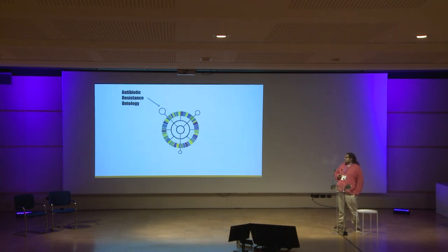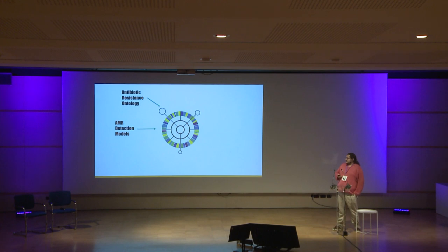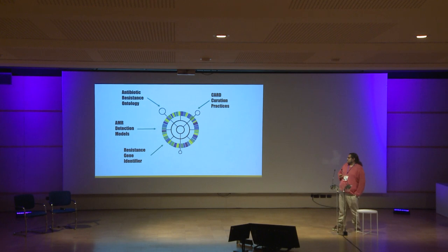Throughout this talk, I'm going to cover the different aspects of CARD: the Antibiotic Resistance Ontology, the AMR detection models that we use in software to detect these things, a little bit about our curation practices, our software — the Resistance Gene Identifier — and the ongoing project, CARD Resistomes and Variants.